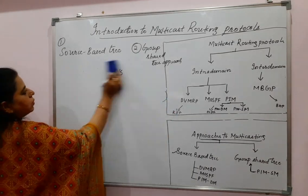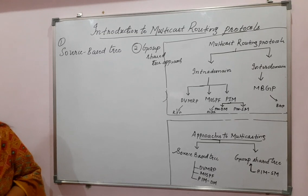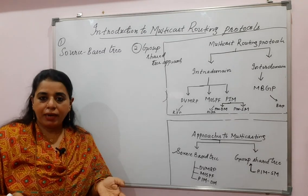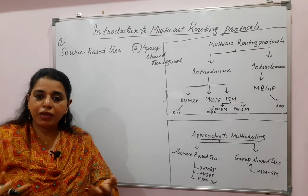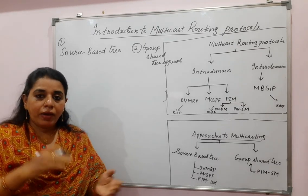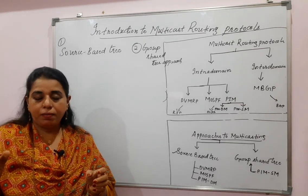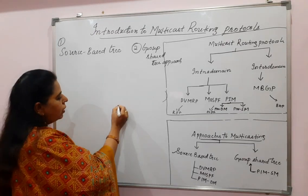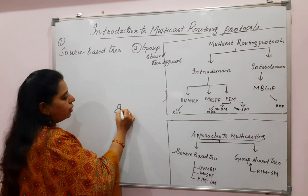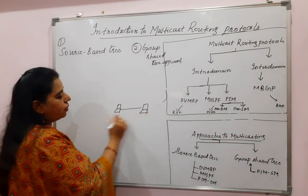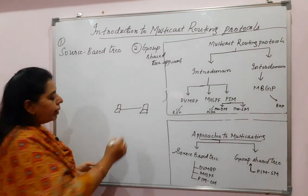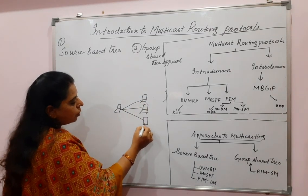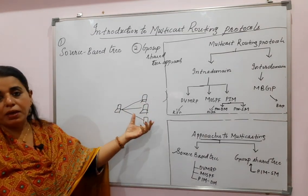In the source-based tree approach, like in unicasting where a node maintains a routing table to reach every other node one-to-one, in multicast it is one-to-many. Many means there are multiple hosts in one group — the recipient is not just one node, it is a group.